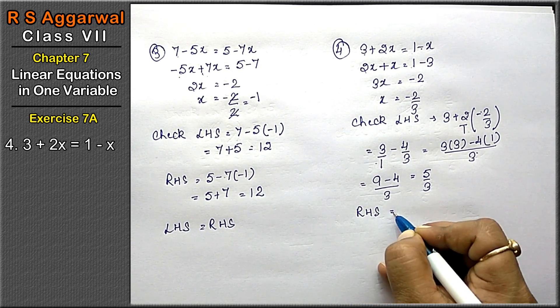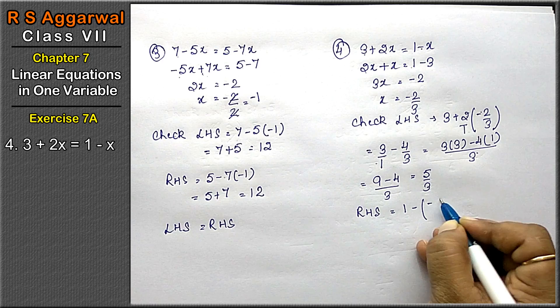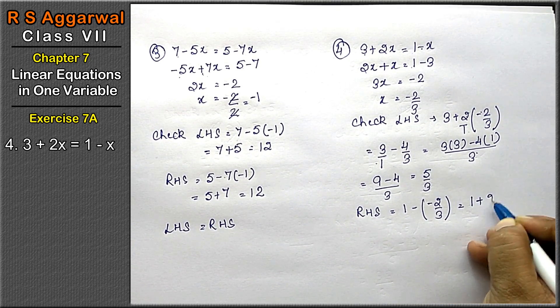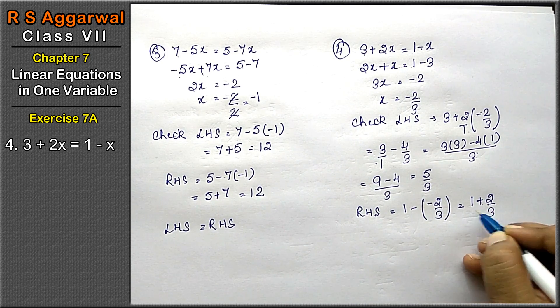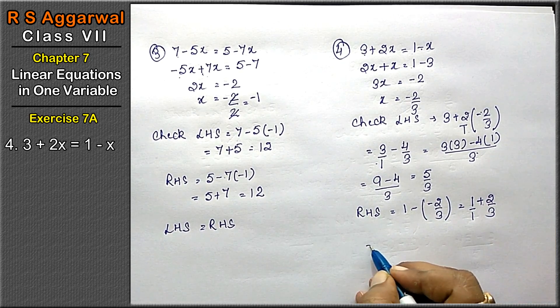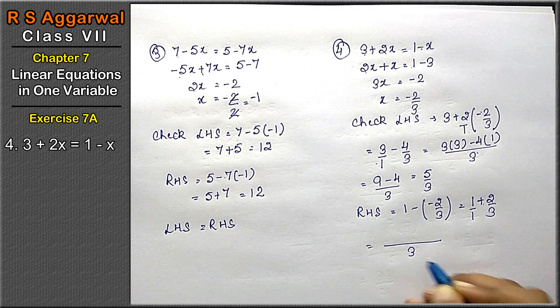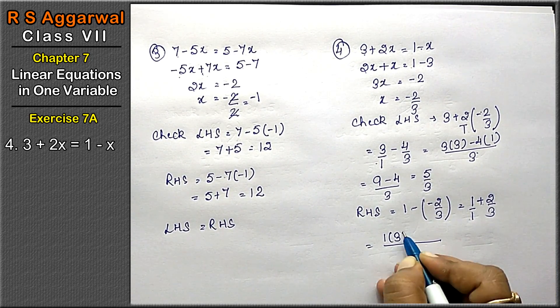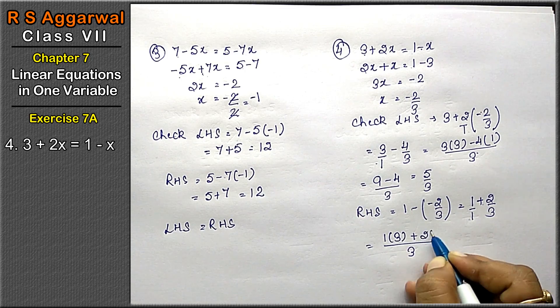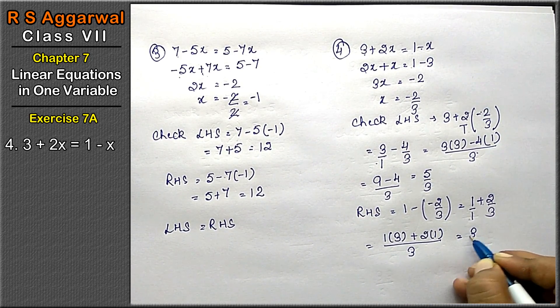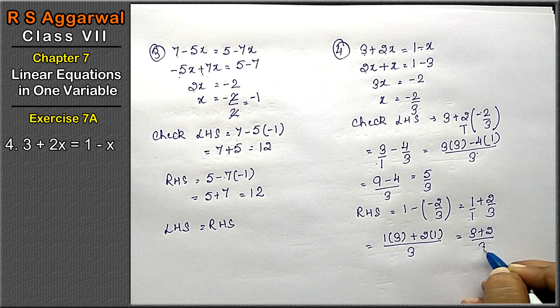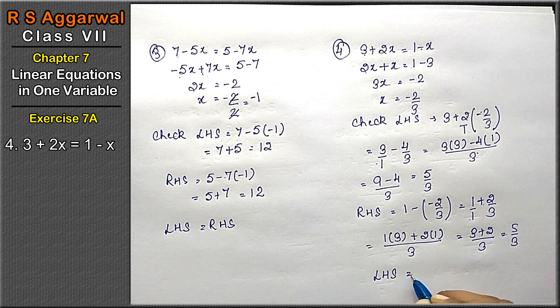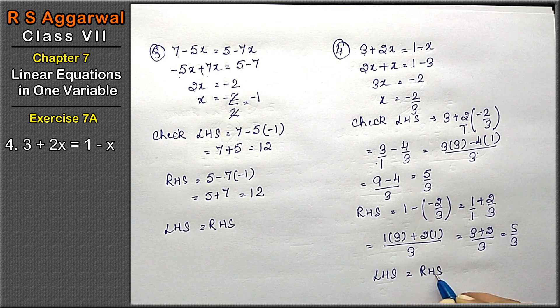Let's take right hand side. Right hand side is 1 minus minus 2 upon 3. That means 1 plus 2 upon 3, minus minus becomes plus. Taking LCM as 3: 3 plus 2 upon 3, which equals 5 upon 3. Left hand side is equals to right hand side.